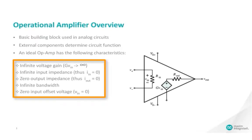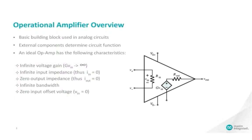Fundamentally, an ideal op-amp has infinite voltage gain, infinite input impedance, zero output impedance, infinite bandwidth, and zero input offset voltage.